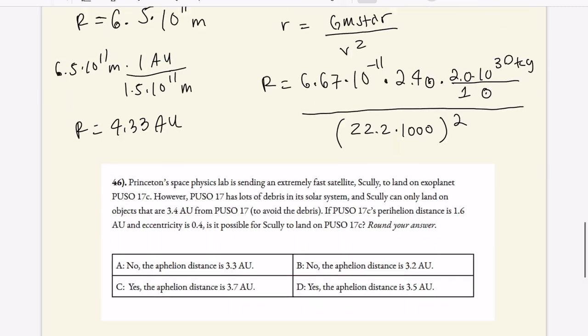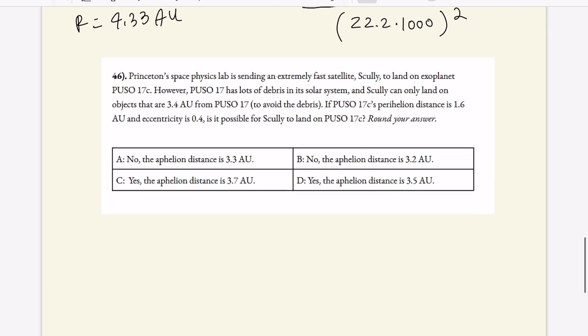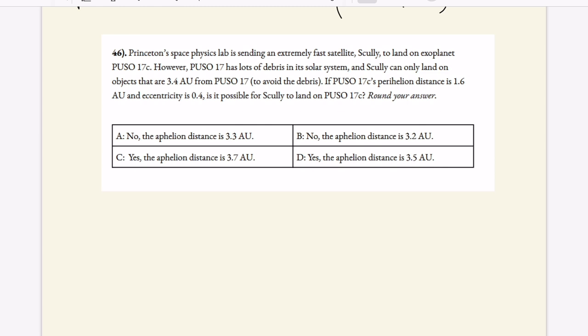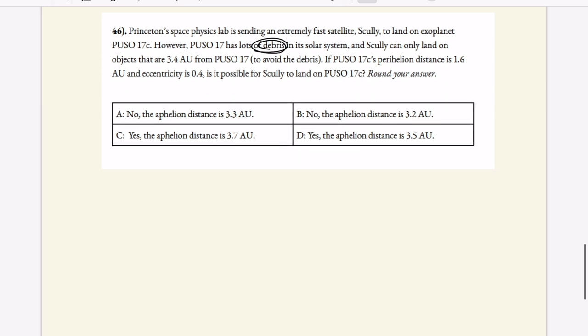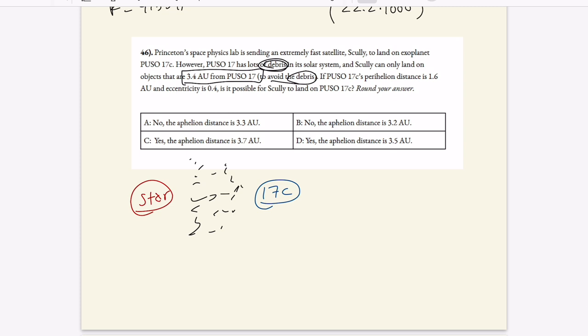Okay, let's move on to question two. Princeton Space Physics Lab is sending a satellite to land on an exoplanet. But this seems to be a really dangerous stellar system. There's a lot of debris in the solar system. So we're given some information. It can only land on objects that are 3.4 AU from PUSO 17 to avoid the debris. So let's draw a little picture. We have a star here and our exoplanet 17C right here. And we need to have it so that there's debris in the system, and we want the conditions such that this orbit is essentially eccentric.